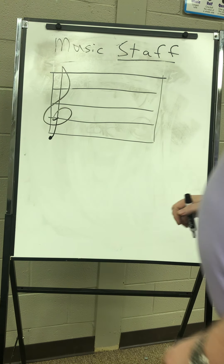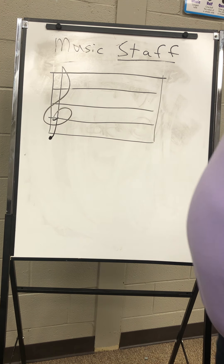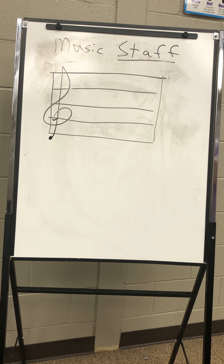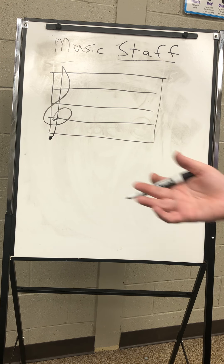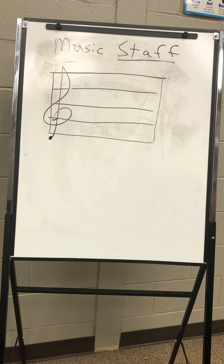I'm going to draw the treble clef here. This is called the G clef because it circles around the G line — you'll see why that's called the G line in just a minute. The treble clef is where all the high voices and instruments are: sopranos and altos in a choir, saxophones, trumpets, flutes, and clarinets all play off the treble clef. Basically all your high instruments use the treble clef.